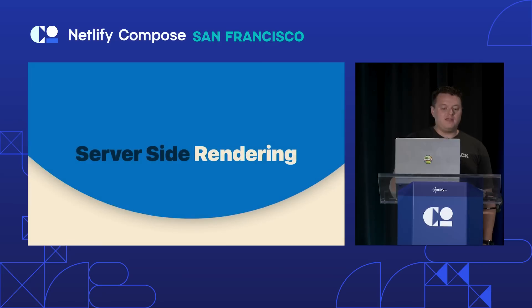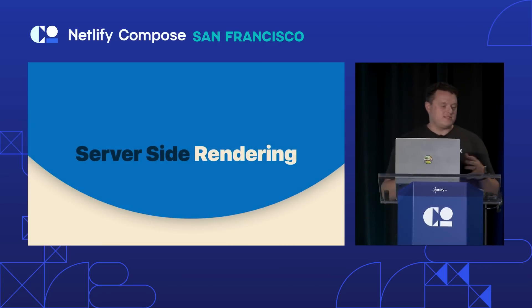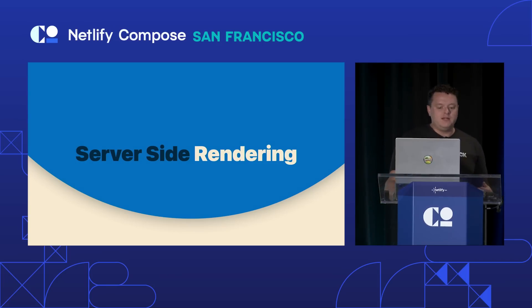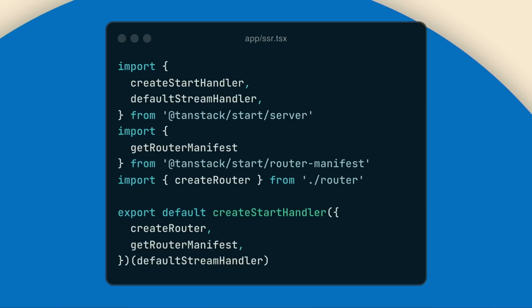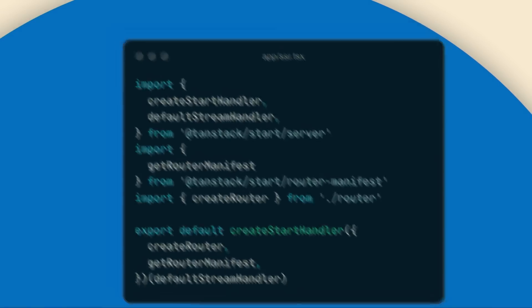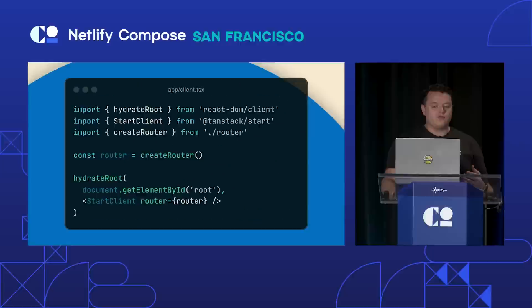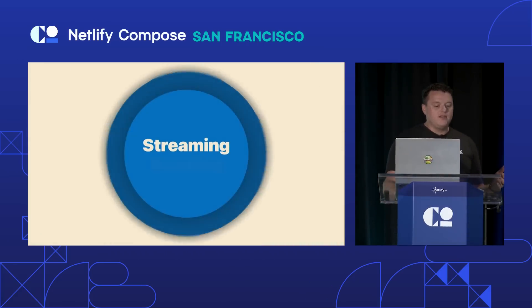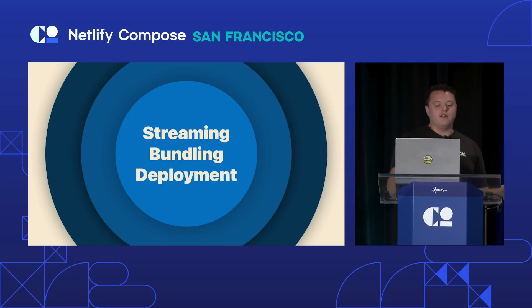The first obvious feature that Start brings to TanStack Router is server-side rendering. By adding just a little SSR entry file and a client entry to handle hydration, you're ready to support streaming, bundling, and deployment to basically any provider — all thanks to Nitro.